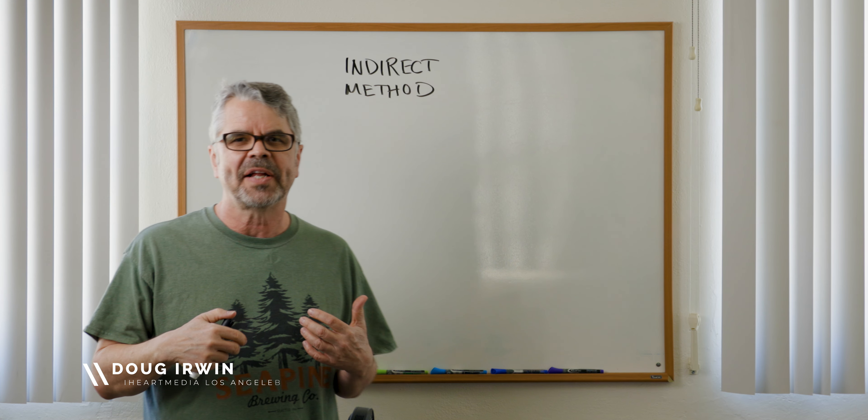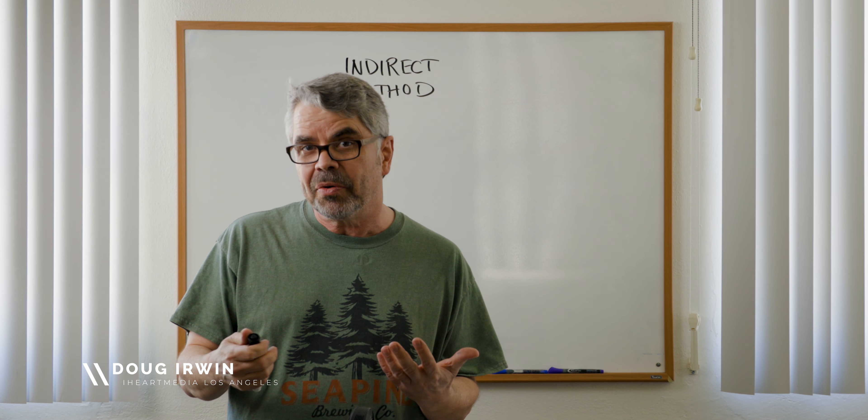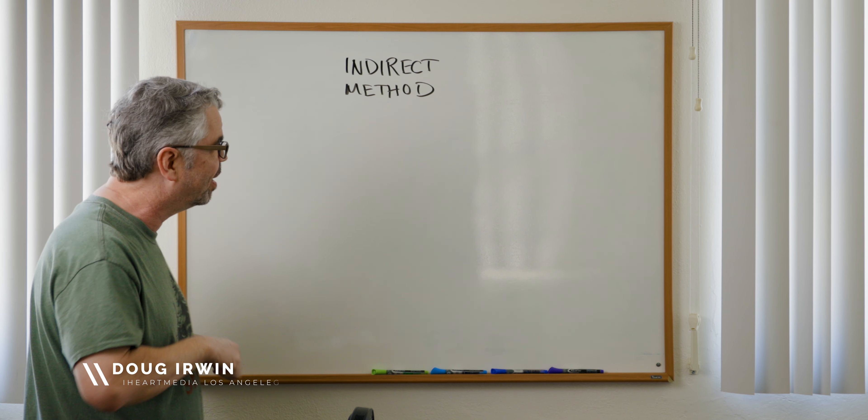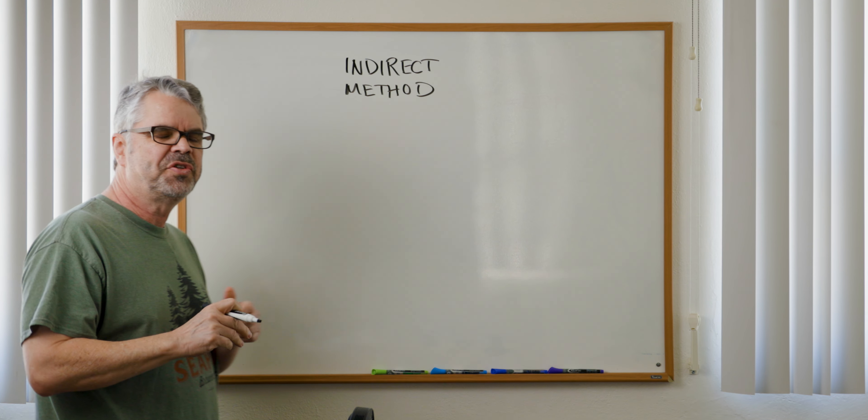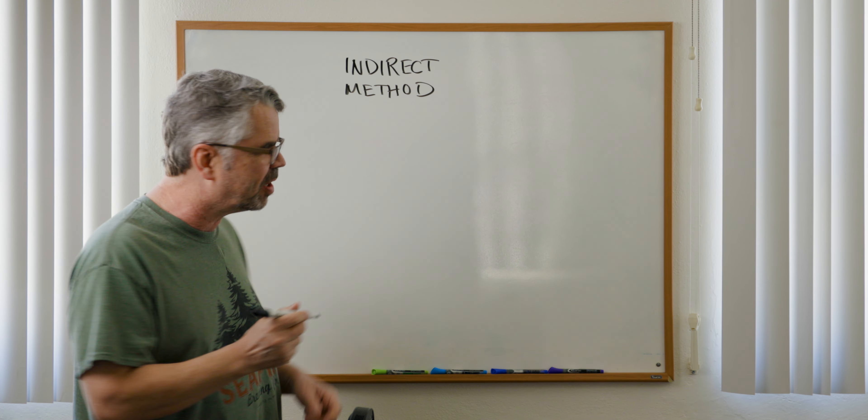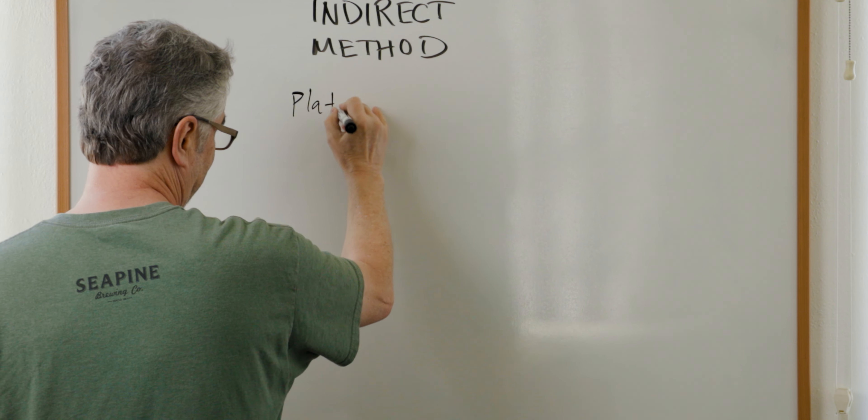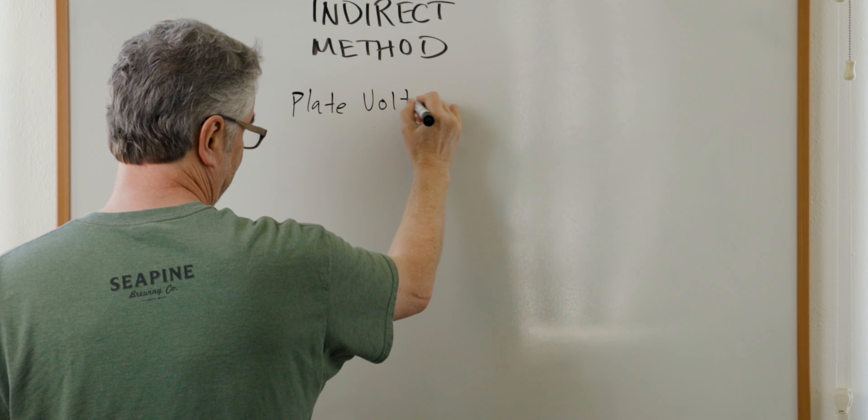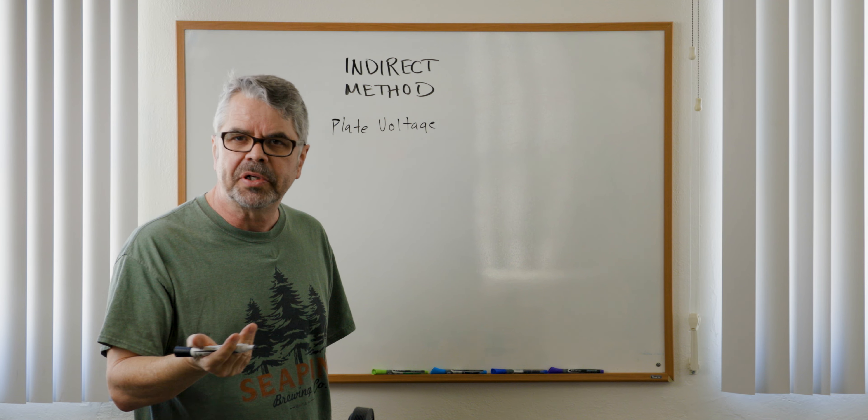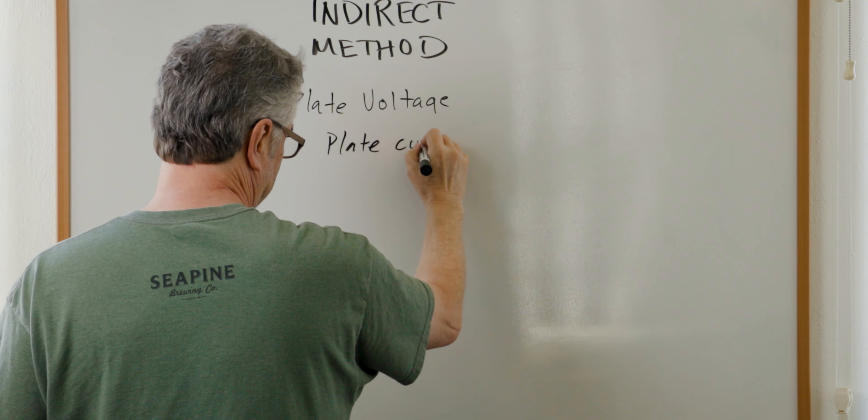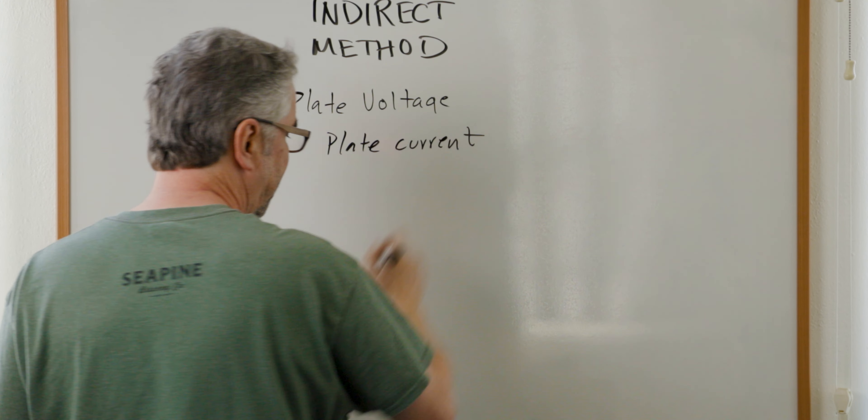You might be asked to calculate the transmitter power output using the indirect method. So what is the indirect method? Well, you have to take two parameters that you measure from the transmitter. One of them is the plate voltage, the other one's the plate current. You'd measure these on your remote control, and you've got something called the efficiency factor.